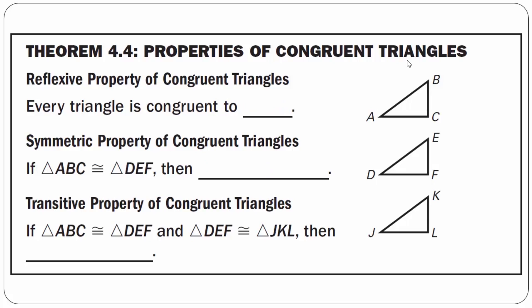Theorem 4.4: Properties of Congruent Triangles. Reflexive property: every triangle is congruent to itself, so triangle ABC is congruent to triangle ABC. Symmetric property: if triangle ABC is congruent to triangle DEF, then triangle DEF is congruent to triangle ABC. Transitive property: if triangle ABC is congruent to triangle DEF, and triangle DEF is congruent to triangle JKL, then triangle ABC is congruent to triangle JKL.